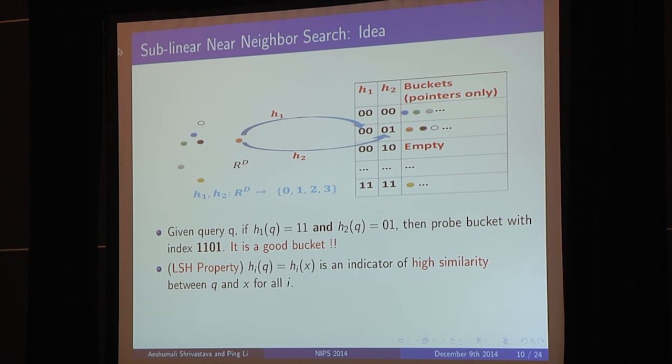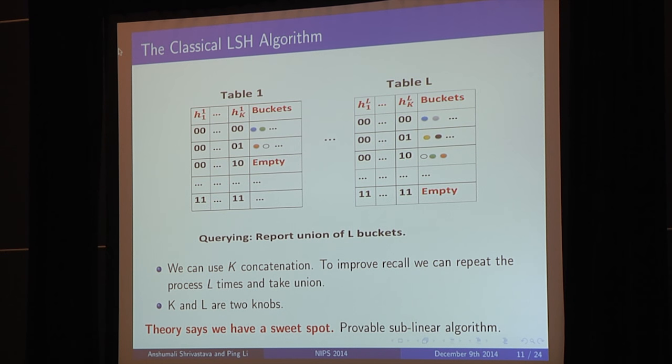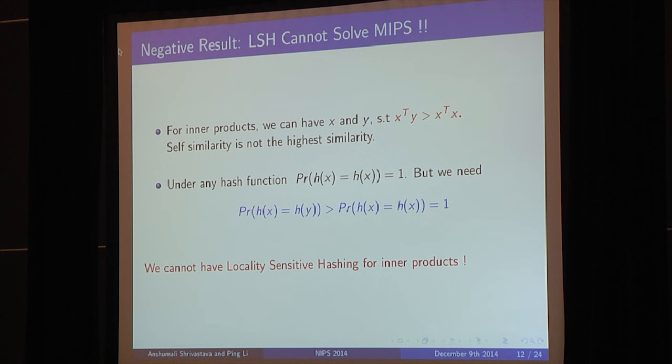And the argument is that it's a good bucket. Why it's a good bucket? Because all the points sitting in that bucket has h1 equal to 1, 1 and h2 is equal to 0, 1. Because that's how they were pre-processed. And we know that collision is an indicator of high similarity. So this bucket is likely to contain more similar points than the query. We are already doing much better than random. And the theory says that this better than random idea can essentially be boosted. So in the previous example, I was using two hash functions, h1 and h2, and I can choose k of them, where k is something which I can tune. And instead of just creating one hash table, I can create l independent hash tables. And while querying, I will report the union of l buckets, one from each table. And theory says that if we are smart in choosing about k and l, then there is a sweet spot and we can find probably sublinear algorithm. So that's the classical LSH algorithm. And all it needs is a hash function, where if two points are similar, they are likely to agree.